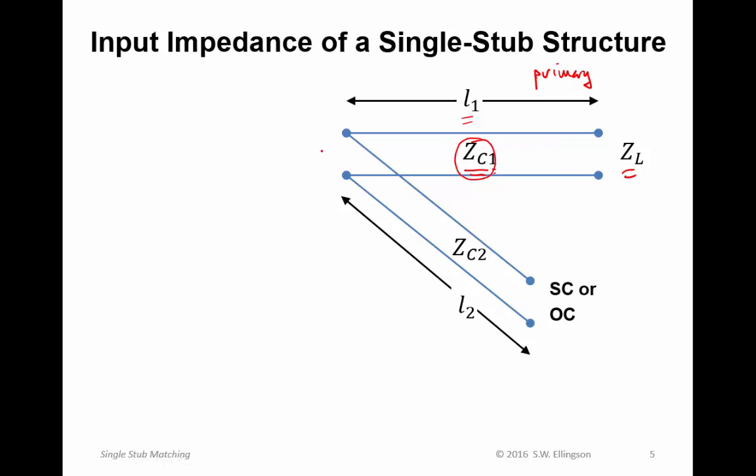Now attached to that at the input is a parallel section of line, which is either short-circuited or open-circuited. This transmission line may or may not be of the same characteristic impedance. So I'll identify that as Z_C2. Although 99 times out of 100, we will make these two impedances the same. The length of this transmission line is L2, and we refer to this as the stub. So this is a stub in parallel with some primary line. And the question is, what is the input impedance now?